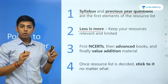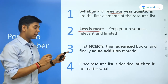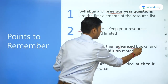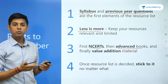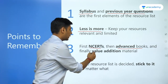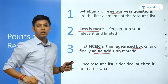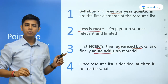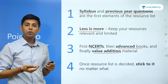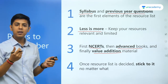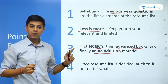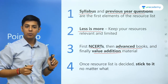Third, the order of reading: first read the NCERTs, then read the advanced books — for example, Laxmikanth for Polity and Spectrum for History. Finally, read the value-addition material — current affairs, magazines, editorials, and government reports. These add that extra value to your content. So the order is: NCERTs, then advanced books, then value-added material.